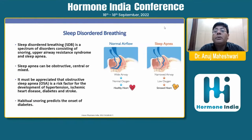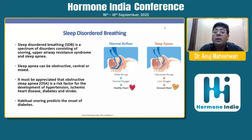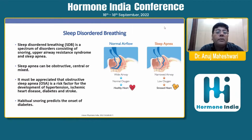You can see in this picture the difference between normal airflow and sleep apnea. A wide airway provides normal oxygen flow, keeping the heart healthy. With sleep apnea, oxygen supply is reduced, keeping the heart under constant stress. Sleep-disordered breathing is a spectrum including snoring, upper airway resistance syndrome, and sleep apnea — which can be obstructive, central, or mixed. Obstructive sleep apnea is a risk factor for hypertension, ischemic heart disease, diabetes and stroke, and habitual snoring predicts the onset of diabetes.